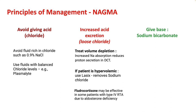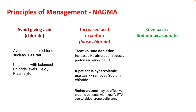One of the important things in non-anion gap acidosis is to treat the volume depletion if present. In the previous lecture on metabolic alkalosis, we understood that increased sodium absorption reduces proton secretion in the DCT. If your patient is hypervolemic, you can use Lasix, which helps excretion of chloride and therefore improves your non-anion gap metabolic acidosis. If you are lacking in aldosterone, supplementing fludrocortisone can be effective in some patients, especially with type 4 RTA.